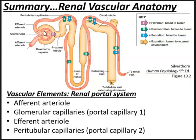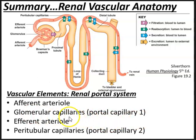A portal system is made up of two capillary networks, one right after the other. The first set of capillaries are the glomerular capillaries, and about 20% of the plasma is filtered into the renal tubules. The remaining 80% leaves the glomerulus through the efferent arteriole and enters the peritubular capillaries, which run along the different parts of the renal tubule. These two sets of capillaries make up the renal portal system.